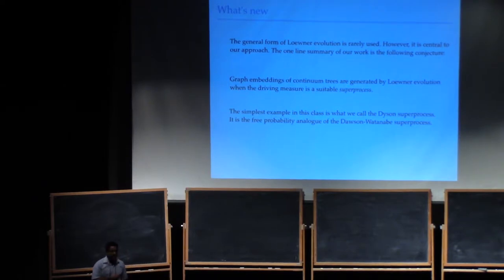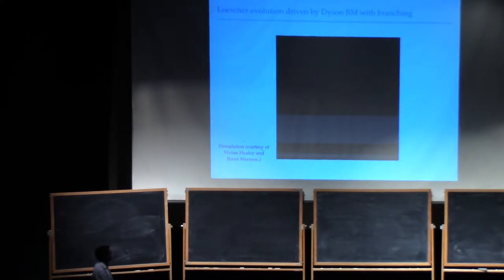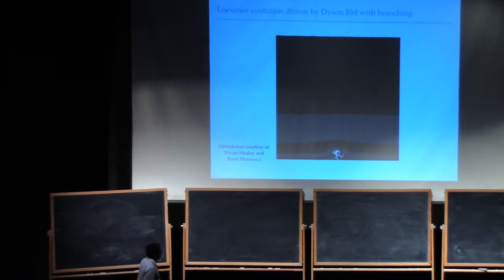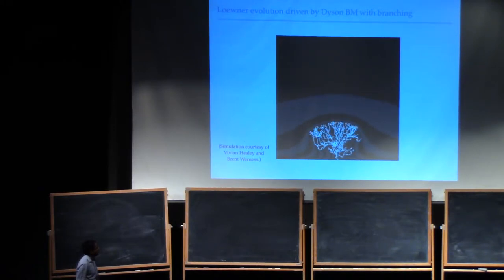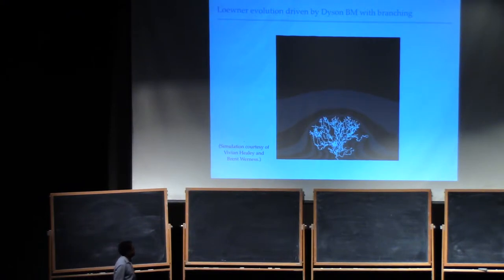To tell you where this is coming from, I'm going to show you a short movie. This is a Löwner evolution driven by a Dyson-Brownian motion with branching. This is a striking movie that Vivian did after coming back from her stay at Washington. This is when I became convinced that what we were doing was actually very interesting.